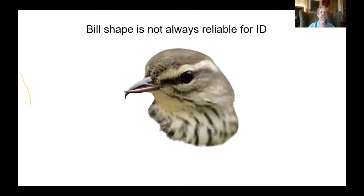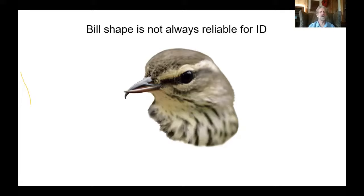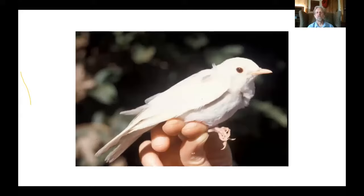A lot of field guides talk about bill shape, but birds do get bill deformities at times. As long as they can still feed themselves, they can survive perfectly fine that way — sometimes for years. This is a northern waterthrush captured at a banding station. Its bill was crossed, and the first thought was 'is this a crossbill?' But it was just a northern waterthrush that was normal in every other way except that it had this bill deformity.